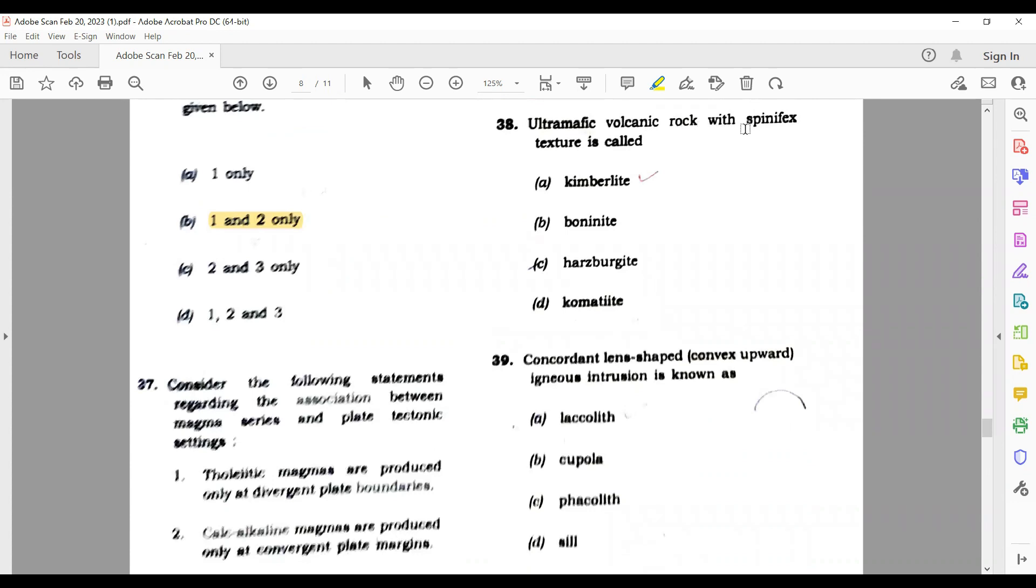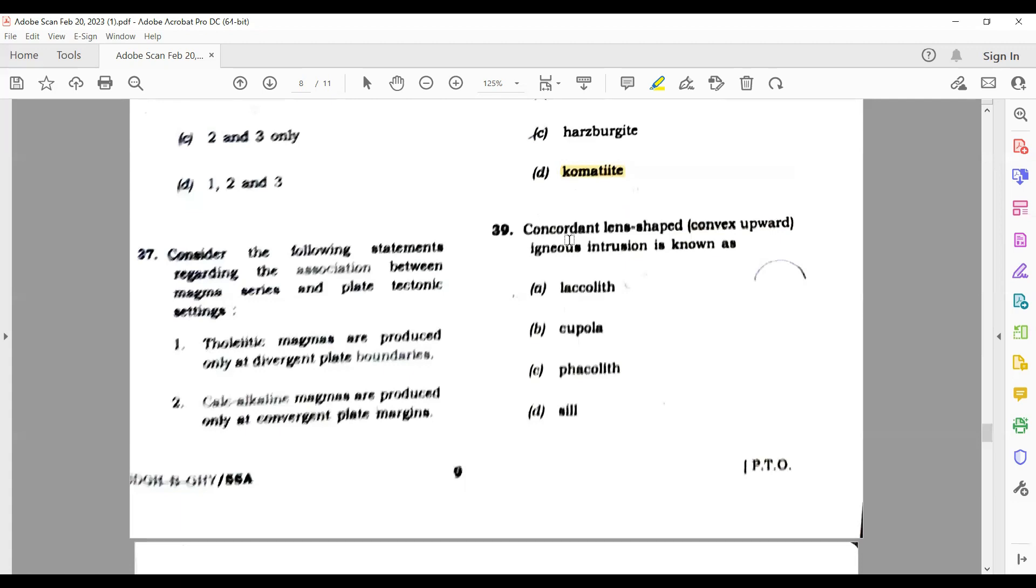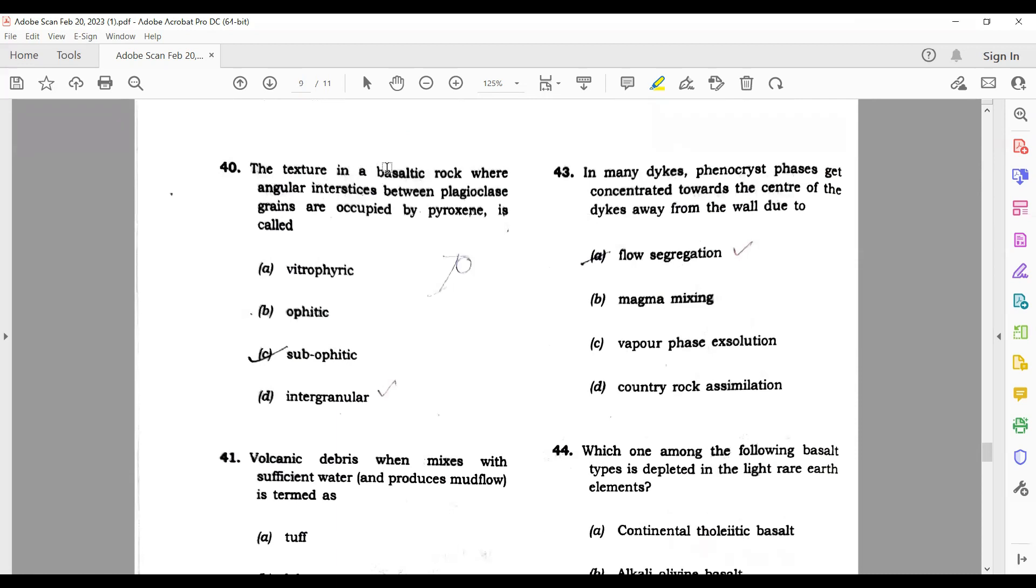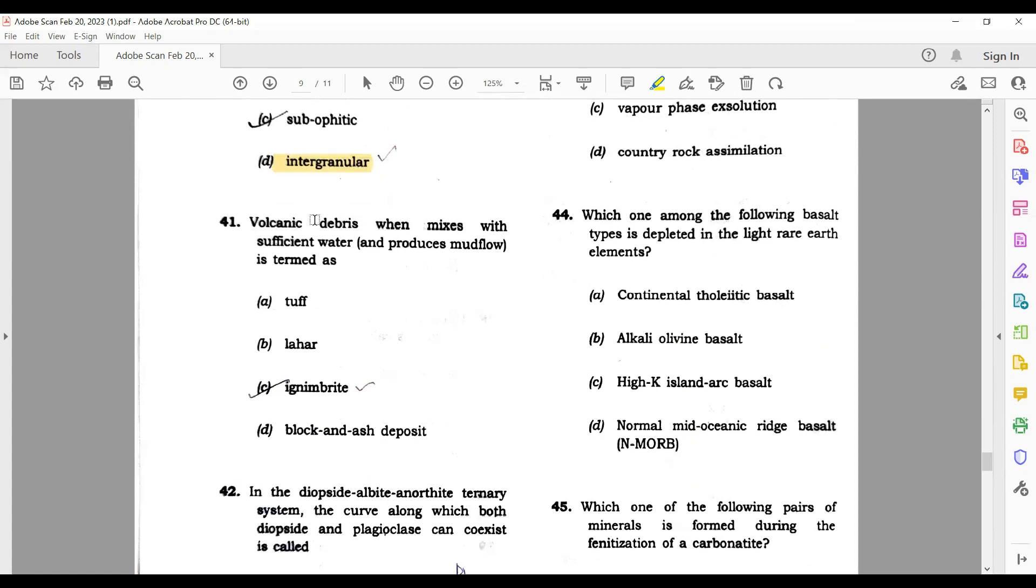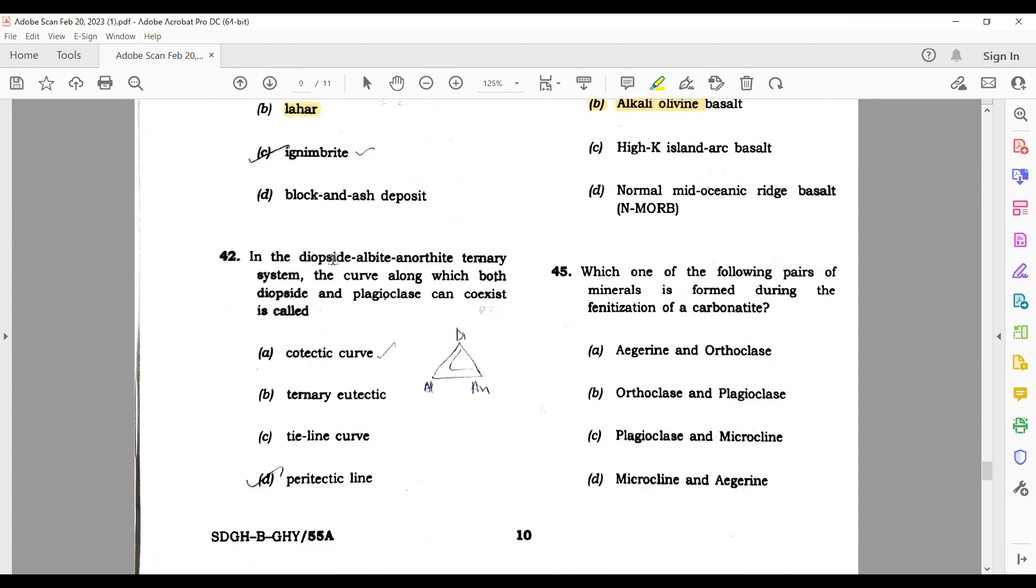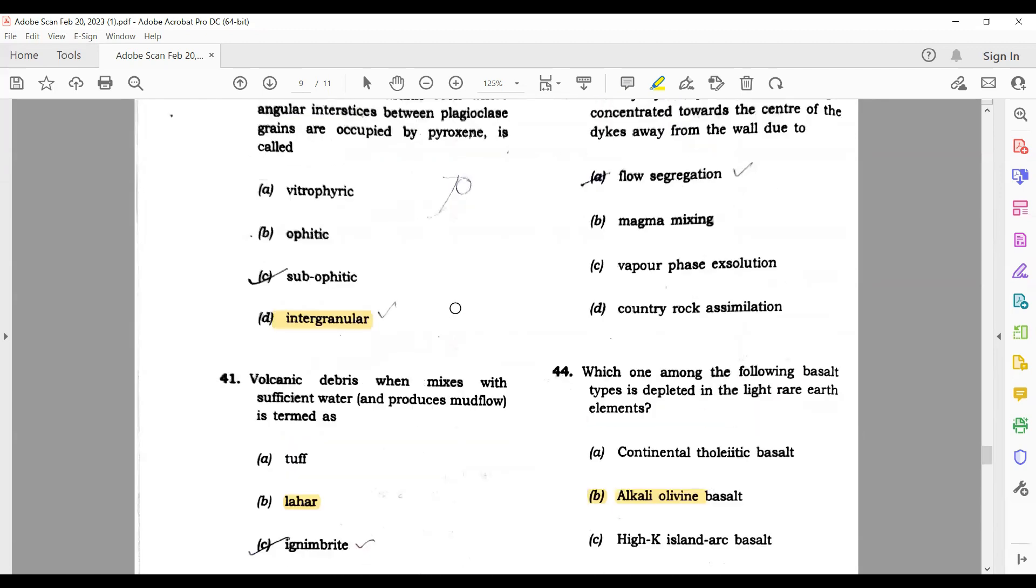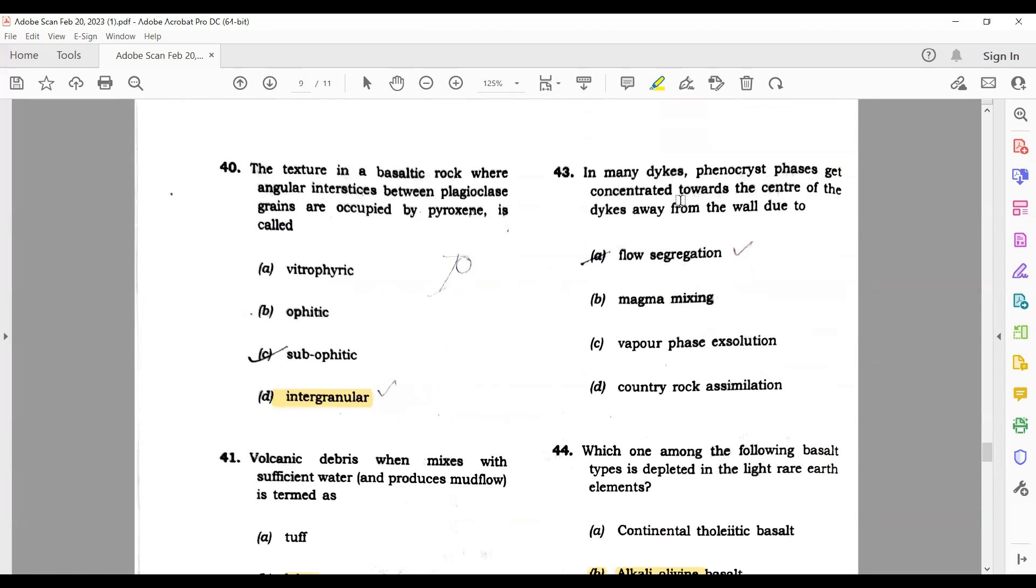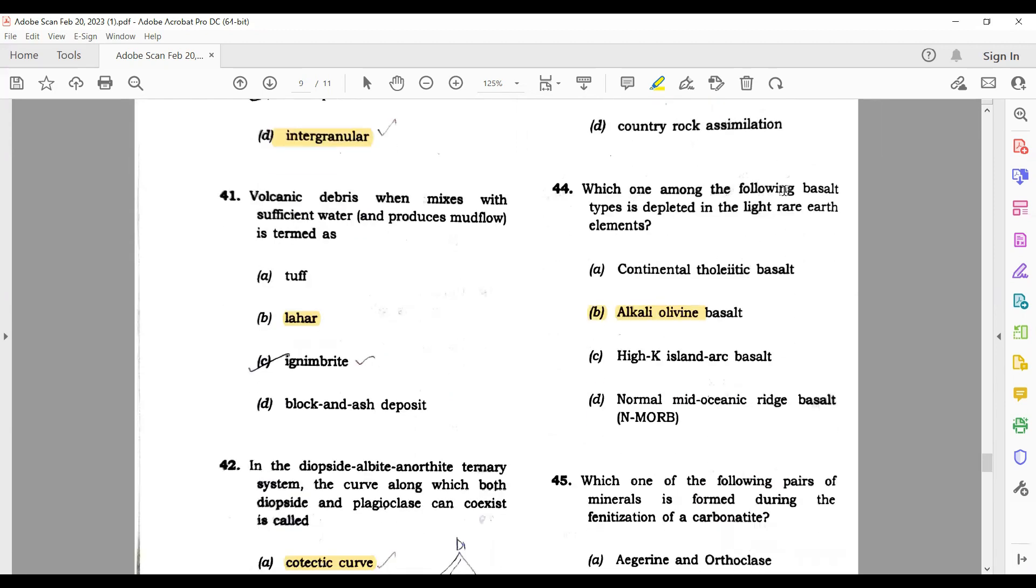Ultramafic volcanic rocks with spinifex texture - its answer is komatiite. Concordant lens shaped igneous intrusion - laccolith. The texture in a basaltic rock in which interstices between plagioclase grains are occupied by pyroxene - most students are confused with ophitic and subophitic but its answer is intergranular. The volcanic debris which mixes with sufficient water is termed as lahar. In a diopside, albite and orthoclase system, the curve along which both diopside and albite plagioclase can coexist is cotectic.